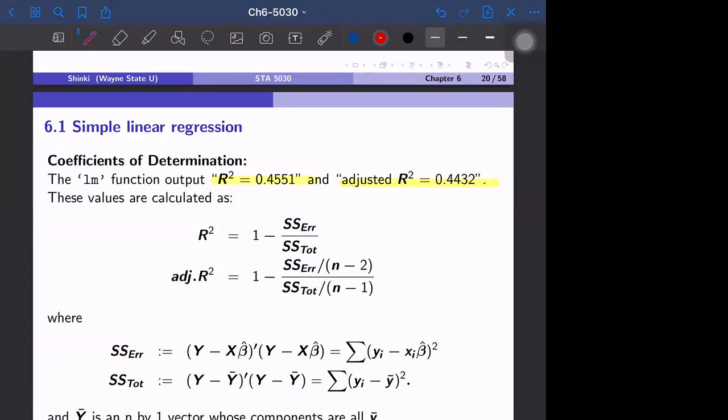So at first the R-square value is defined by 1 minus SS_error over SS_total. So sum of squared error over sum of squared total. And SS_error is defined as the sum of residual squared. So this is epsilon_i hat squared.